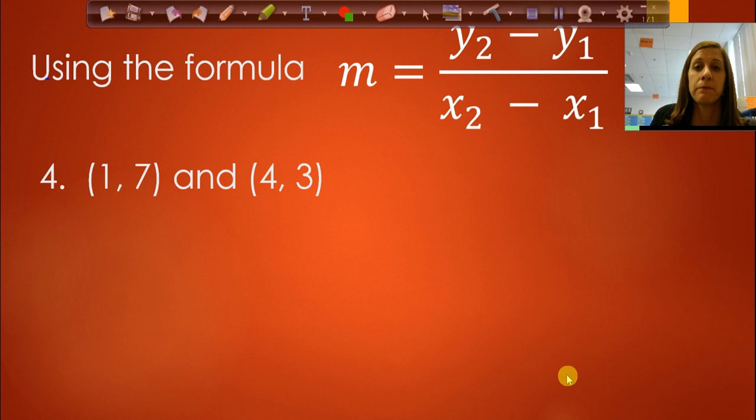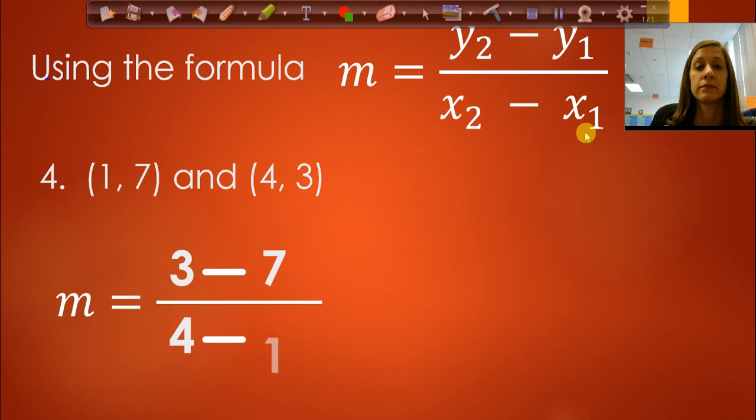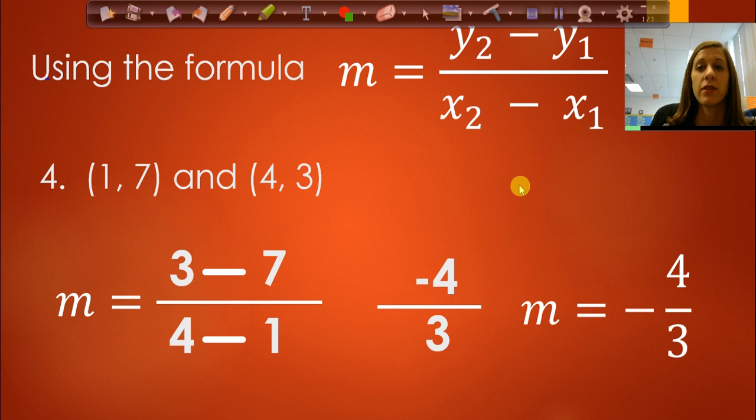Let's do one more example. So y sub 2, I'm going to go to the second point and write down the y value. Bring over the subtraction sign. I'm going to go to point 1 and take the y value, which is 7. In the denominator, I'm going to go to point 2 and take the x value. And then minus, I'm going to take the x value from point 1. Now we just need to finish our calculations. 3 minus 7 in the numerator is negative 4. 4 minus 1 is 3. So that means our slope is negative 4/3.